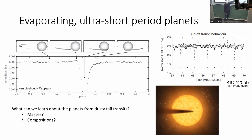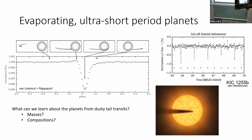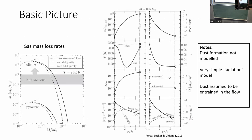The default answer as to why we get the trailing tail is radiation pressure on the grains acting against gravity, effectively lowering the mass of the star the dust grain feels compared to the planet, so it orbits on a longer period, producing a trailing tail. So those were the two competing explanations: trailing tail due to radiation pressure, or due to mass loss from the night side.